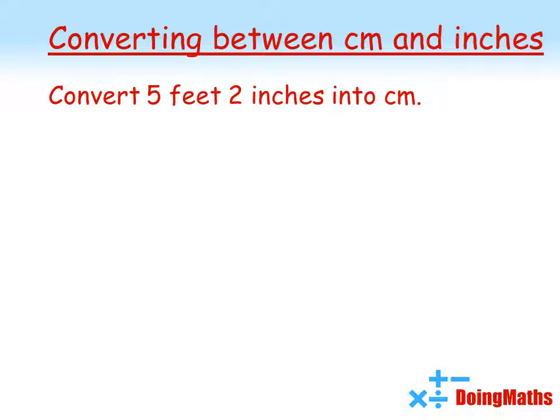What about if we want to convert feet and inches into centimeters? We've got 5 feet, 2 inches. First of all, here's our conversion: 1 inch is 2.5 centimeters. We're going to convert the feet and inches into just inches to make this easier. 12 inches in 1 foot, so 5 feet and 2 inches must be the same as 62 inches.